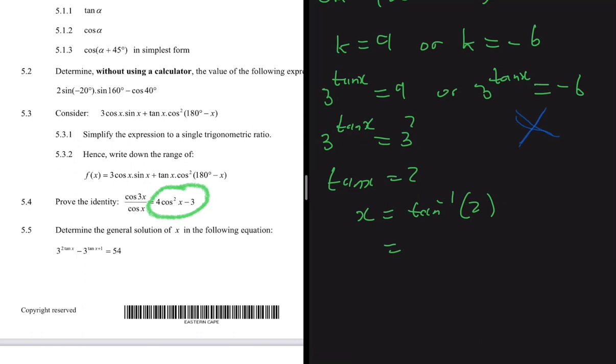But tanX is not only equal to 2 on that range—it equals 2 every cycle it completes. So the right way of writing it: X = 63.43° + K×180°, where 180° is the period of tan and K should be a whole number.